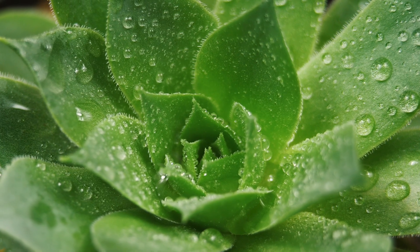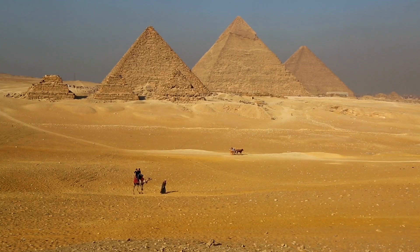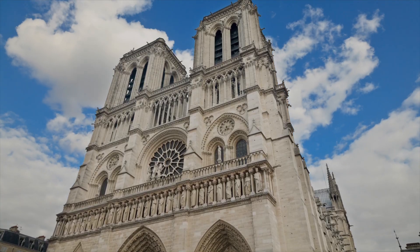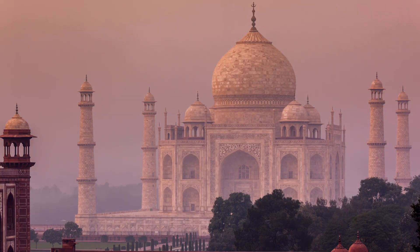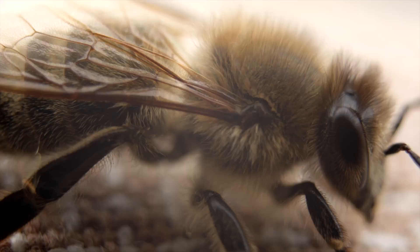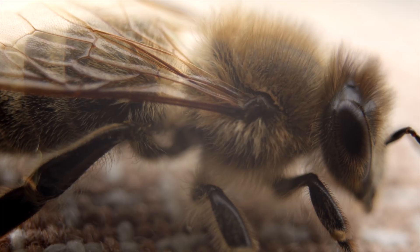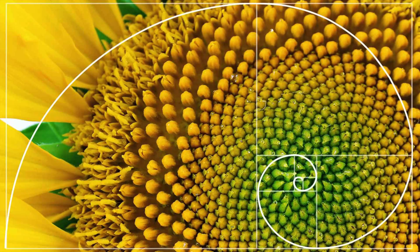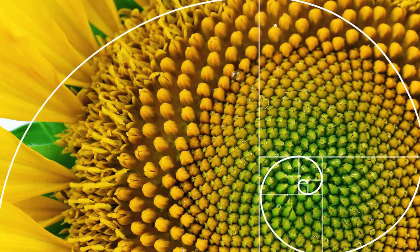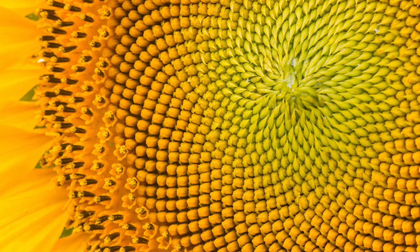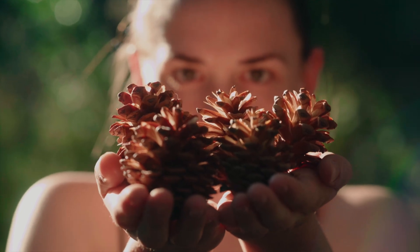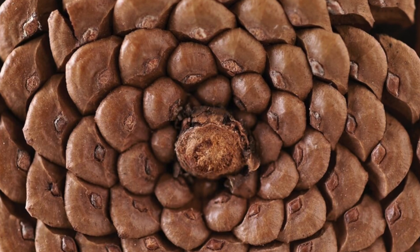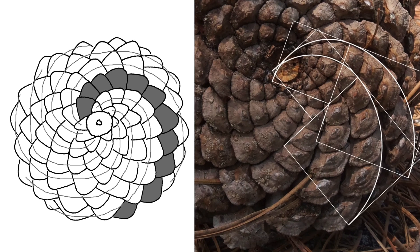The golden ratio has been used throughout history to construct the pyramids of Giza, the Pantheon, the Notre Dame Cathedral, and the Taj Mahal. It also exists throughout nature — within the honeybee's family tree and how they inherit DNA, within the inside centre of sunflower seeds. Sunflowers are arranged in spirals that follow the Fibonacci numbers. Pine cones are similar to sunflowers — when you count the spirals going in one direction they calculate the Fibonacci sequence, or the golden ratio.